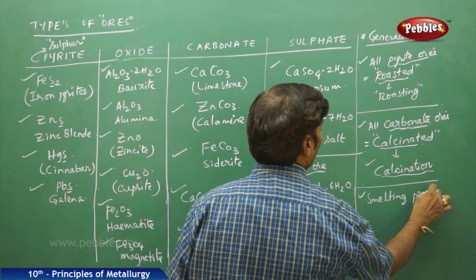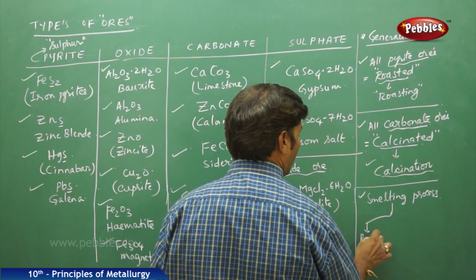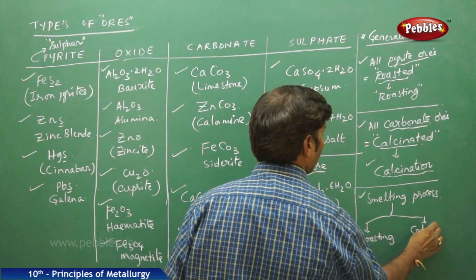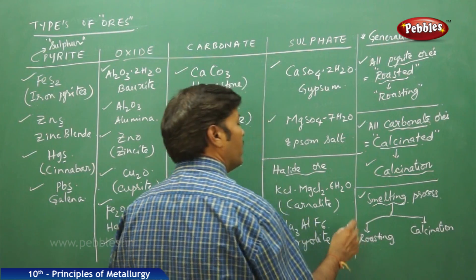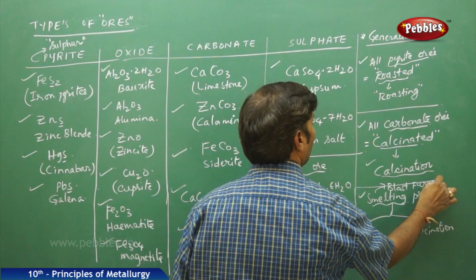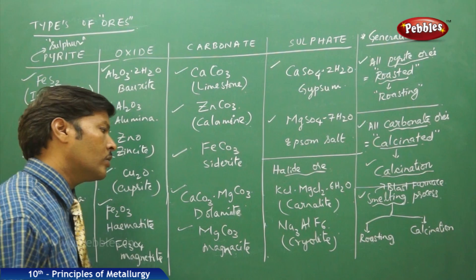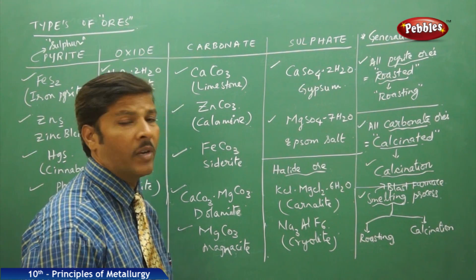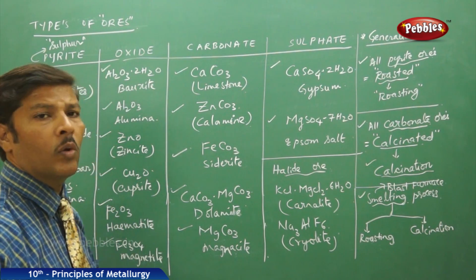Smelting involves both roasting and calcination. The smelting process cannot be done on its own — it requires a blast furnace depending on the kind of extraction. Smelting always requires a blast furnace to carry out the extraction of metal from the mineral ores.